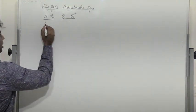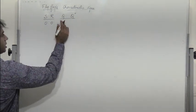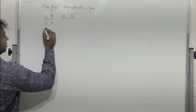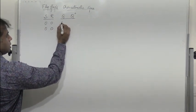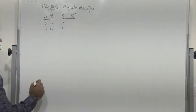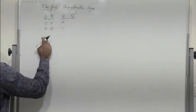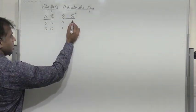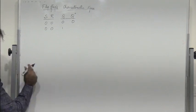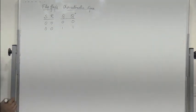When S and R are both zero, irrespective of whether Q is zero or one, the next state remains the same. That is, when S=R=0, if the current state is zero the next state will also be zero, and if the current state is one the next state will also be one.